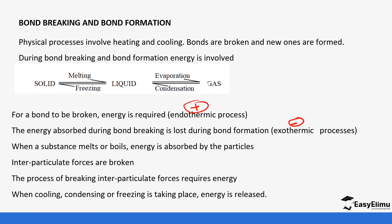For bond breaking, where solids, liquids and gases are forming, it's an endothermic process. But the opposite reaction, where cooling is taking place and where new bonds are forming, energy is released — so it's an exothermic process.